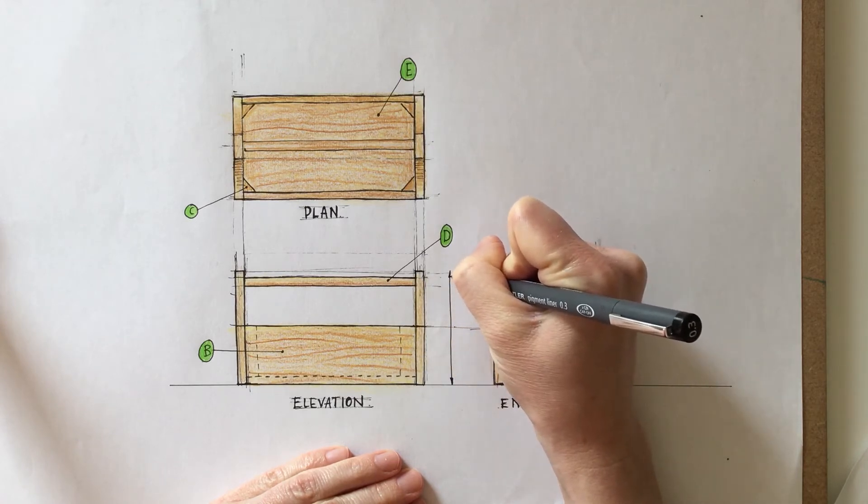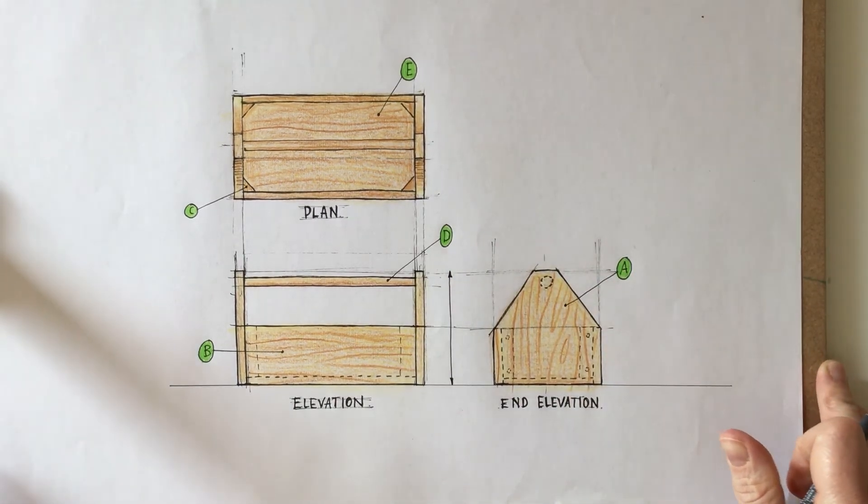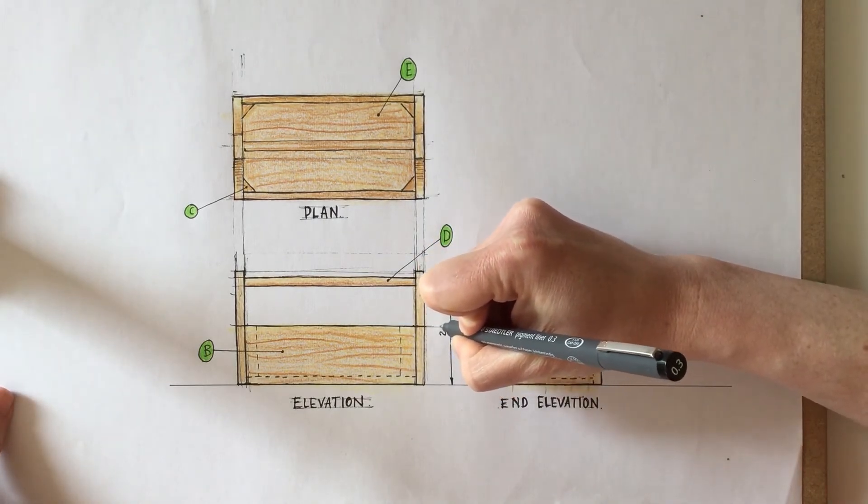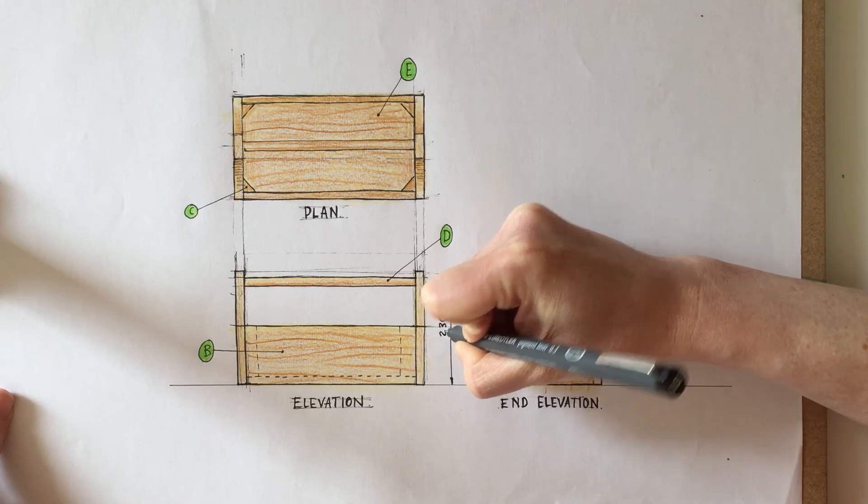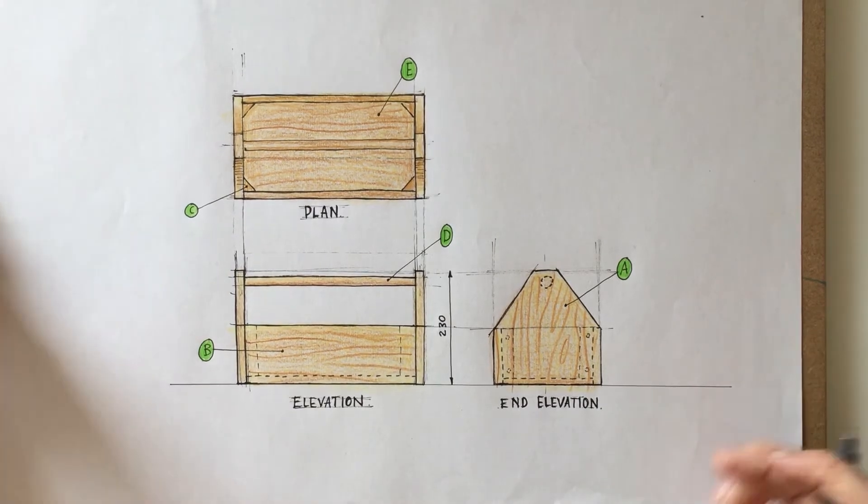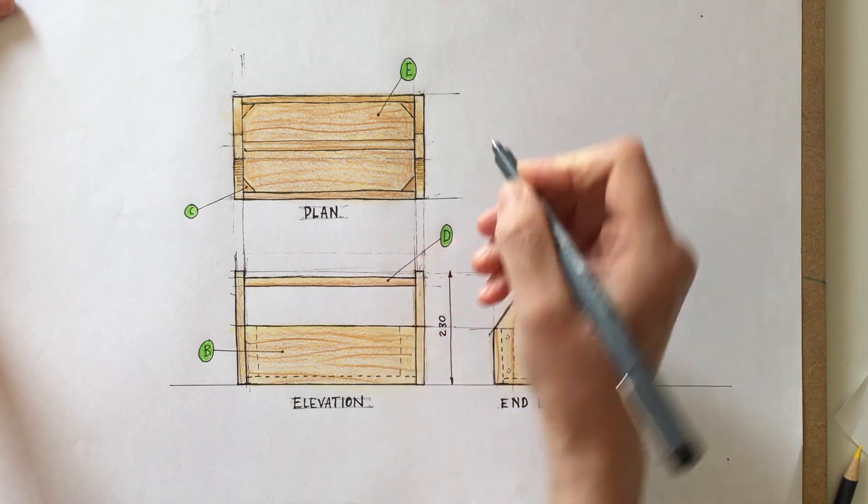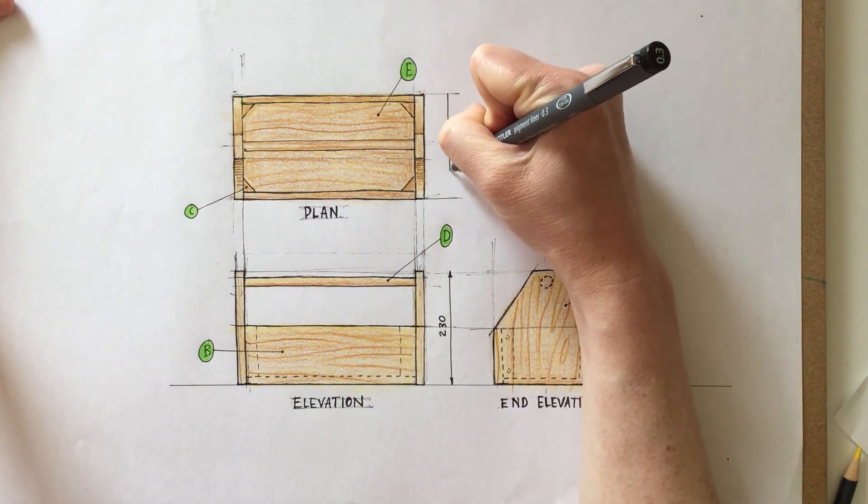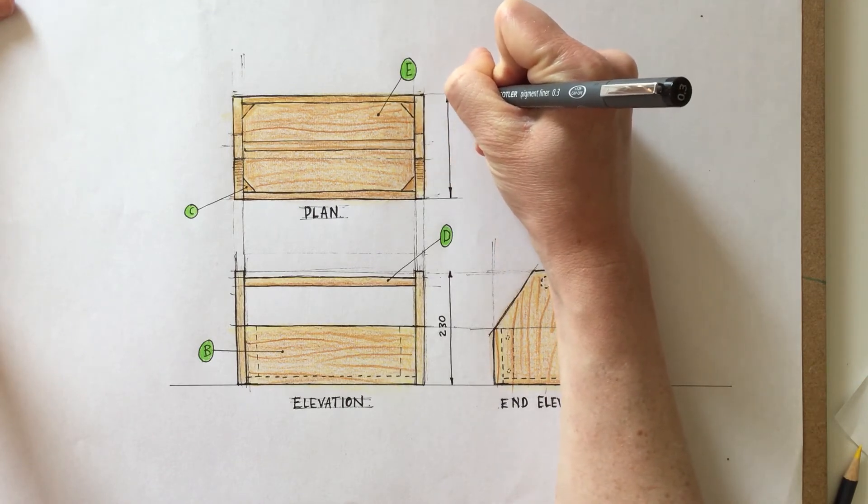Now to do that we're going to draw a dimension line, and we're going to draw that line in line with the height of the box. At the end we're going to draw in some little thin arrows which will indicate that this is a dimension line, and next to it, as you can see I've done just lying on the left hand side, I've written in the size of it which is I think 230 millimeters. All dimensions are always in millimeters, so you don't have to add in the mm, and you just leave it as a number.